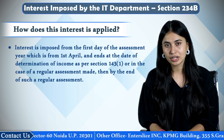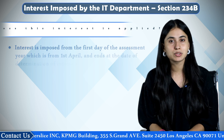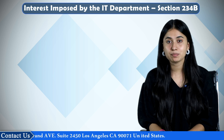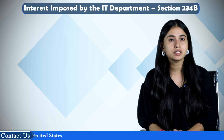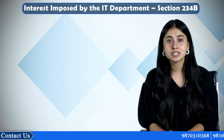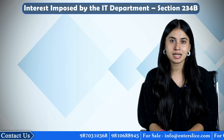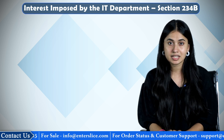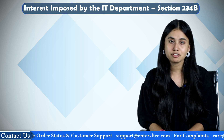If the income is decreased or increased as a result of a rectification order made by the Settlement Commission, then interest will also be increased or decreased accordingly. In circumstances where the taxpayer has paid any tax before the closing of the assessment, interest will be levied under Section 234B in two possible manners: first, interest will be calculated on the unpaid or short-paid advance taxes up to the date of payment made for self-assessment tax; second, interest will be imposed on the unpaid or short-paid amount of advance taxes after deducting the self-assessment tax paid by the taxpayer from the date of that payment.